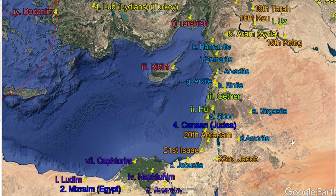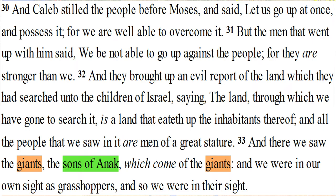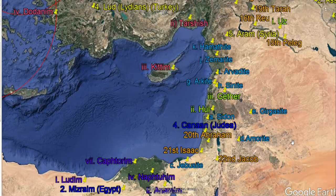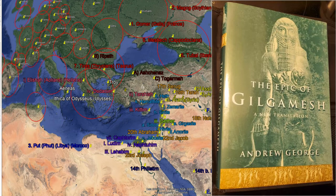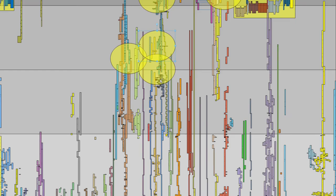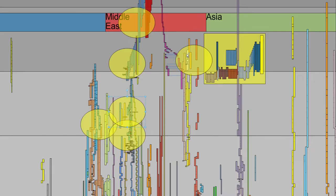The Israelites are supposed to be going into the promised land. They send out 12 spies. Ten of them come back and give that very bad report pastors always like to talk about: 'And there we saw the giants, the sons of Anak, which come of the giants, and we were in our own sight as grasshoppers.' When I see something like that, I don't think these people were just a little bit big with 20-pound axes. I think these people were really big — so big they were scaring everybody away. When you think back to the time of Nimrod and Uruk and Gilgamesh, you had these city-states governed by somebody really big.